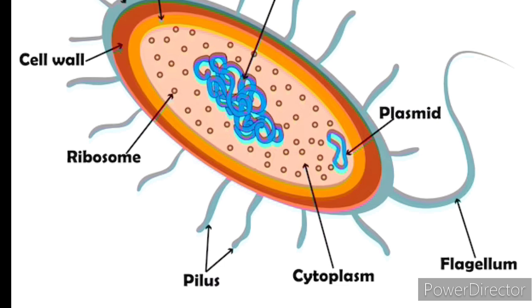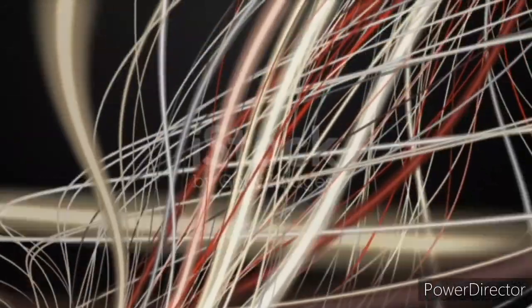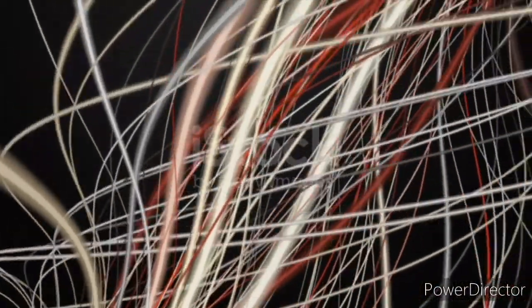Intracellular transport. The cytoskeleton acts as a highway system for intracellular transport. Dynamic properties. The cytoskeleton is highly dynamic, continuously undergoing assembly, disassembly, and reorganization.